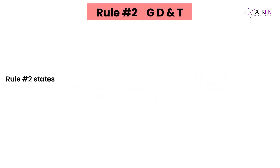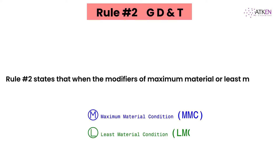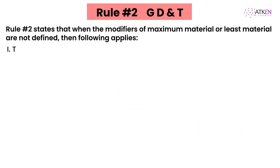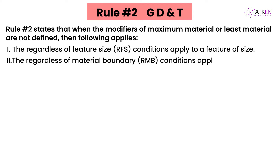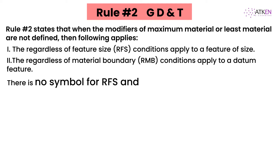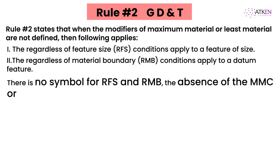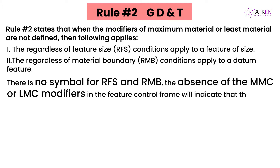Rule 2 of GD&T states that when the modifiers of maximum material or least material condition are not defined, the following applies: the Regardless of Feature Size (RFS) conditions apply to a feature of size, and the Regardless of Material Boundary (RMB) conditions apply to a datum feature. There is no symbol for RFS and RMB — the absence of the MMC or LMC modifiers in the feature control frame indicates that the default condition of RFS is in effect.